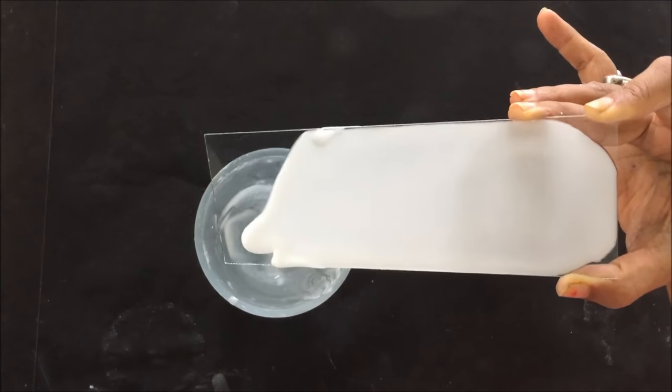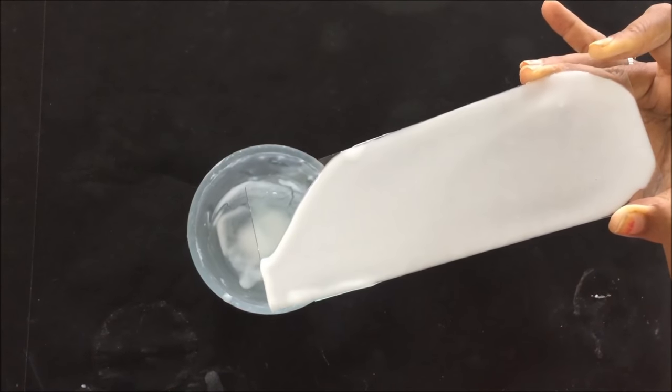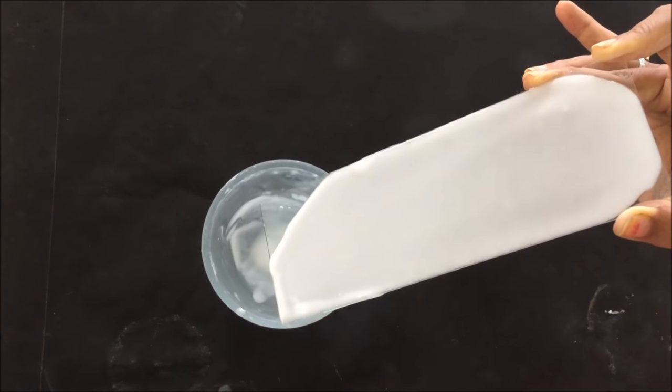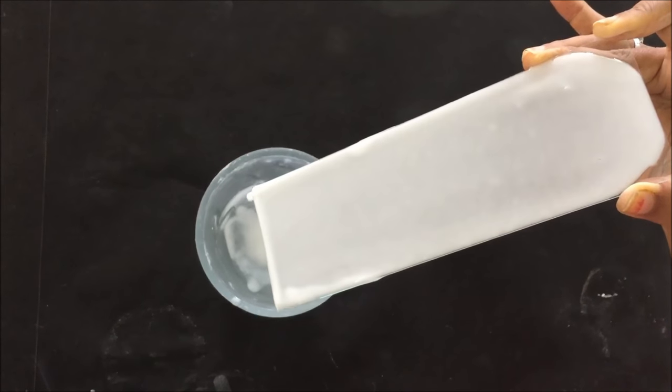Move the glass plate so that the slurry gets uniformly coated over the glass plate. You can see that the slurry is uniformly coated over the glass plate.